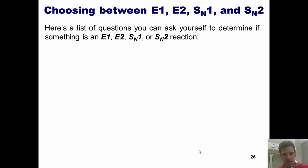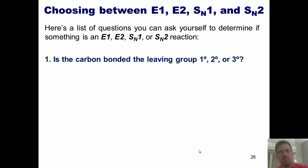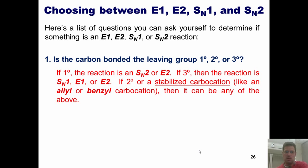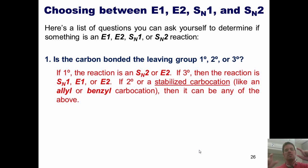That brings us to Mike's list of three questions to determine if a reaction is going to be E1, E2, SN1, or SN2. Question number one: is the carbon bonded to my leaving group primary, secondary, or tertiary? If it's primary, then the reaction can only be SN2 or E2. The reason is that in E1 and SN1 reactions, the leaving group takes off first, giving a carbocation — and we'll never get a primary carbocation because they're way too unstable. So if it's primary, it can only be SN2 or E2.